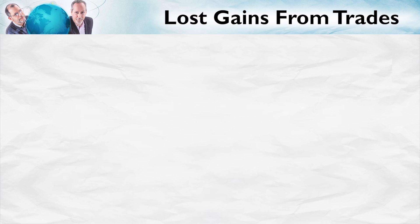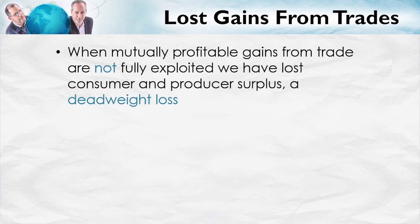When we have a free market, all of the mutually profitable gains from trade are exploited. That's another way of saying that a free market maximizes producer plus consumer surplus. When the mutually profitable gains from trade are not fully exploited, there's lost consumer and producer surplus — or a deadweight loss.